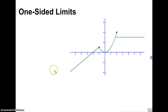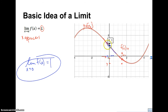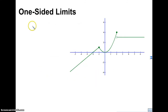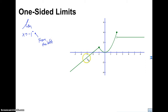Now let's take a look at one-sided limits. Remember, a regular limit approaches a value from both sides. A one-sided limit means you're coming from just one direction. For example, the limit as X approaches negative 1 from the left — that little negative superscript means from the left — so you're approaching negative 1 from the left side. For this function, as I approach from the left, the Y value approaches 1, so that one-sided limit is 1.